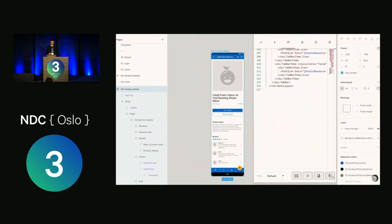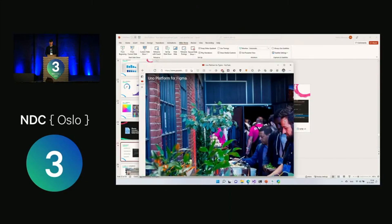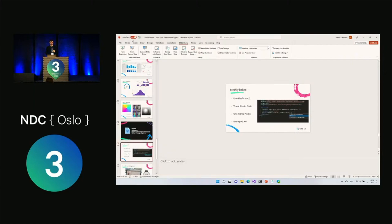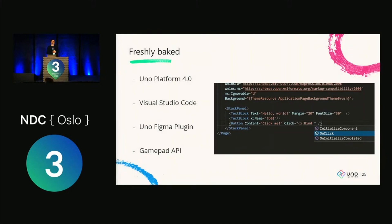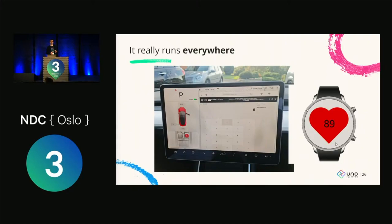One of my favorite recent contributions is Gamepad APIs, which brings support for game controllers into Uno Platform applications. You can build mobile and web games using Uno Platform UI with SkiaSharp as the rendering, and control them with an Xbox controller or PlayStation controller — working across all platforms: web, Android, iOS, macOS. To drive home that it truly runs everywhere: here's the Uno Calculator running on a Tesla in a browser, and also on a watch with Tizen. It really does run everywhere — whatever your imagination allows.